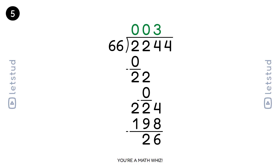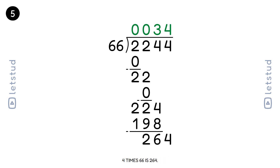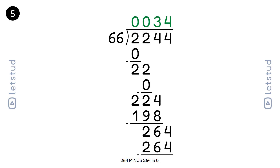Let's get the last digit. We have a remainder of 26 and bring down the 4 to make 264. 66 fits into 264 four times. 4 times 66 is 264. 264 minus 264 is 0.